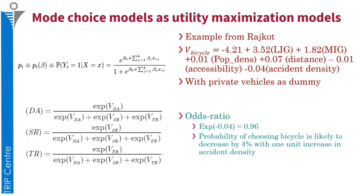For example, if population density increases by one unit in the city, then the utility of using a bicycle will increase by 0.01 compared to using a private vehicle. These values can be converted into an odds ratio, which is the exponential of the different coefficients estimated using logistic regression. For instance, the exponential of minus 0.04 gives a value of 0.96, meaning the probability of choosing bicycle is likely to decrease by 4% with one unit increase in accident density. Such a model helps identify control variables for encouraging demand for bicycles and walking in the city.